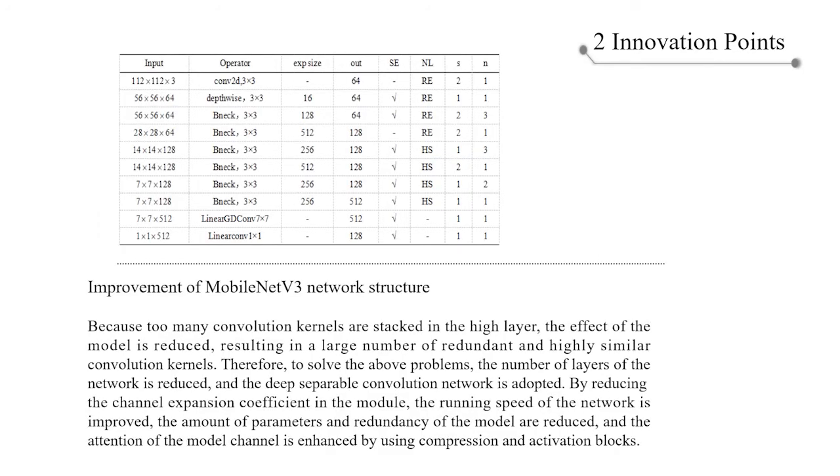Finally, the improvement of MobileNet V3 network structure. Because too many convolution channels are stacked in the high layer, the effect of the model is reduced, resulting in a large number of redundant and highly similar convolution channels. Therefore, aiming at the above problems, this paper reduces the number of layers of the network and effectively reduces the amount of parameters.